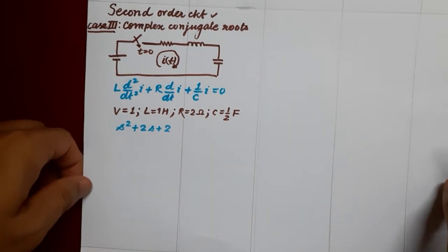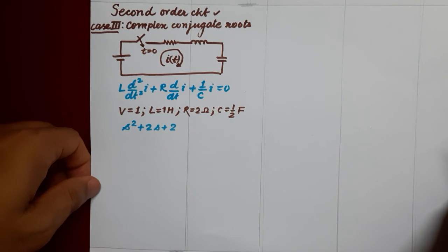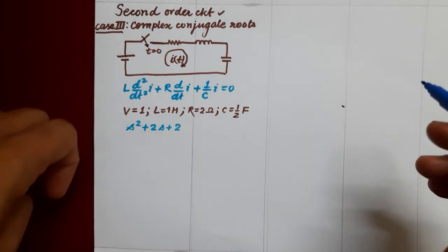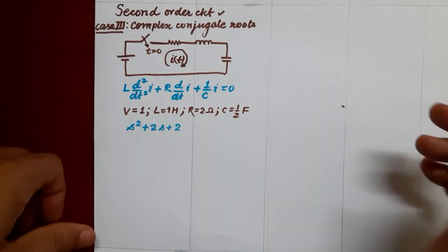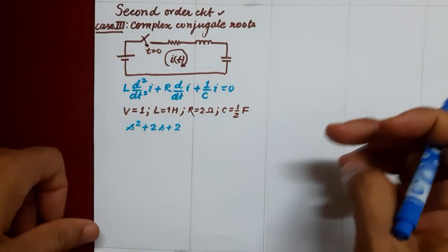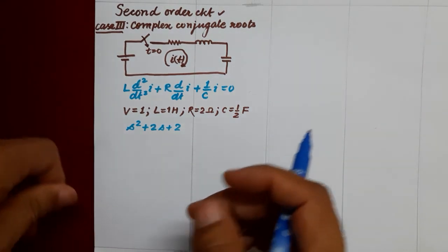Welcome to this class of Network Analysis and Synthesis. Here we will be discussing second order circuit, case 3, where complex conjugate roots come.